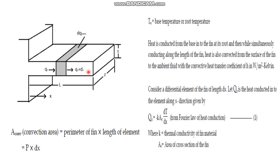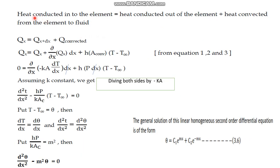For this elemental area under steady-state conditions, writing an energy balance: the heat entering equals the heat leaving. That is, qx = qx+dx + q_convected. Heat conducted into the element equals heat conducted out of the element plus heat convected from the element to the fluid.